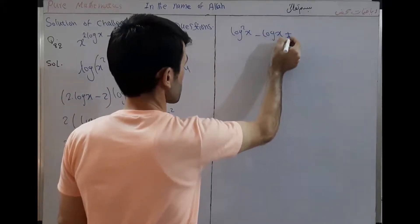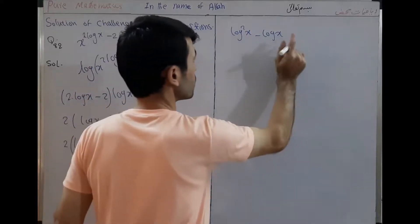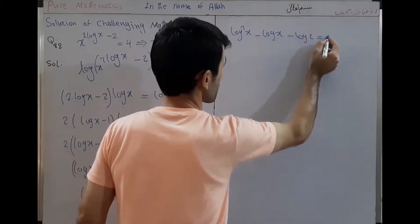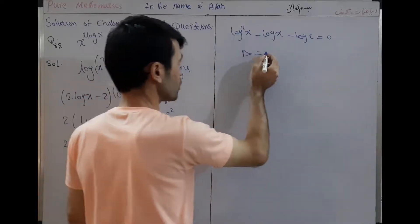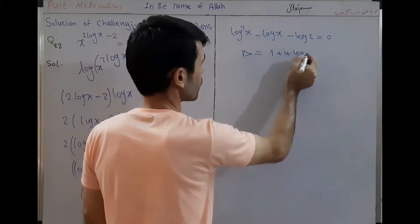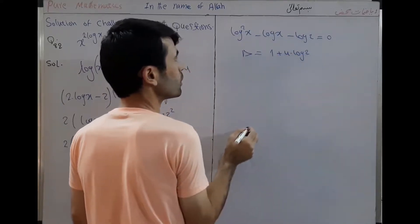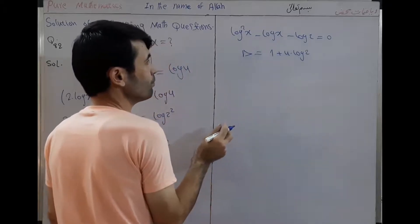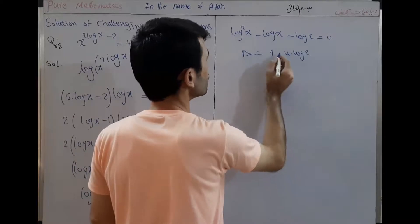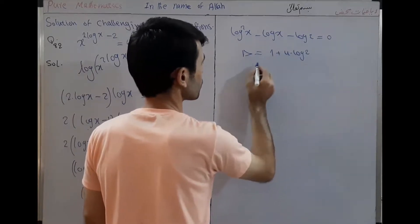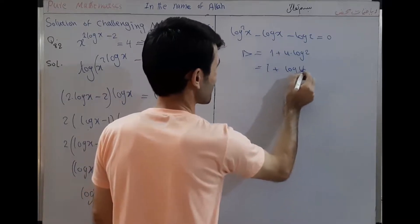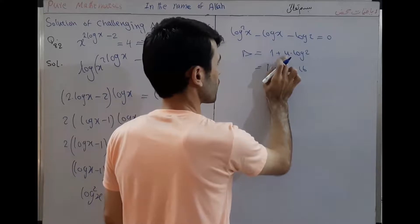Setting the equation to zero, the discriminant delta is equal to 1 plus 4 into log 2. We get log x plus 4 into log 2 equal to 1 plus log 16, since carrying the coefficient gives us log 16.